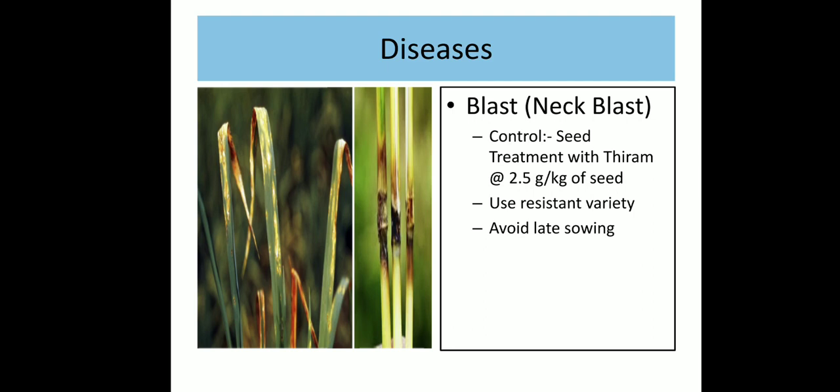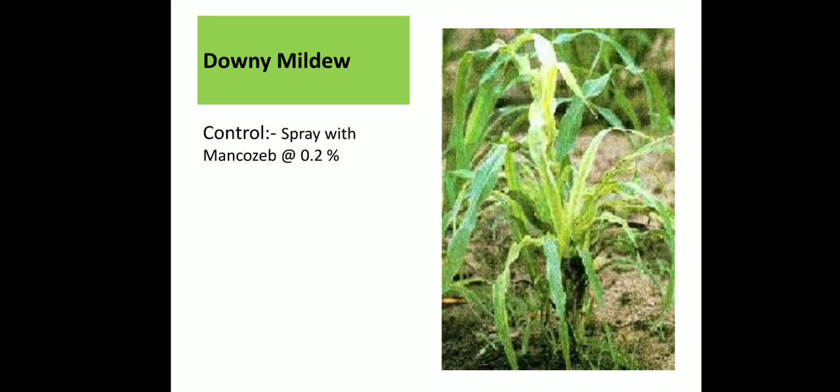Disease: Blast is a major disease affecting the leaves, peduncles and ear head, and can even affect young seedlings. It can be treated with seed treatment of thiram or kerosene, or by use of blast-resistant varieties, or by avoiding late sowing. Downy mildew symptoms similar to pearl millet may develop when infected by the downy mildew fungus. As a result, the plant may be stunted or leaves may arise closer than normal. It can be controlled by spray of 0.2% mancozeb.